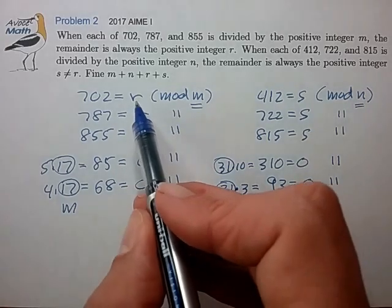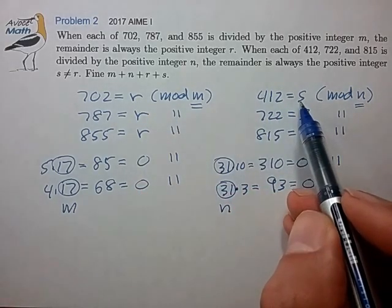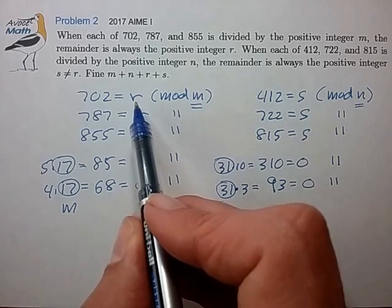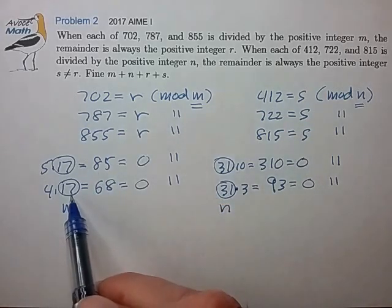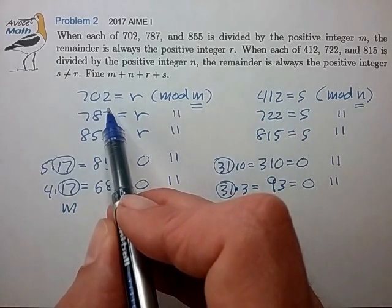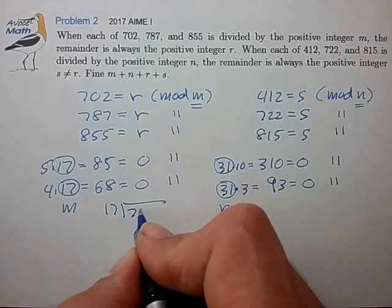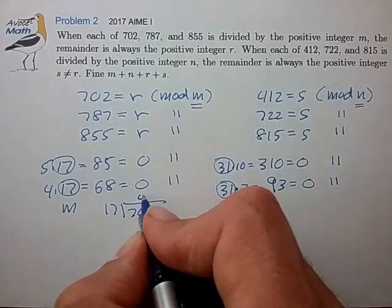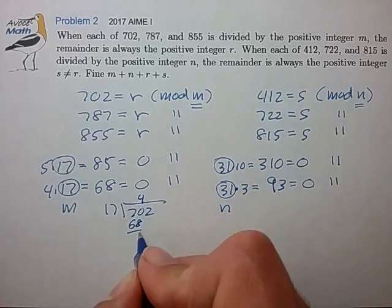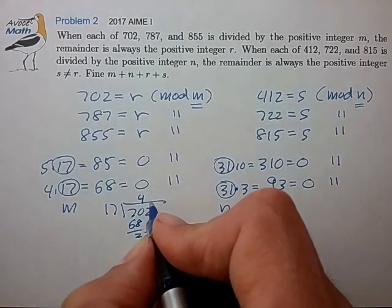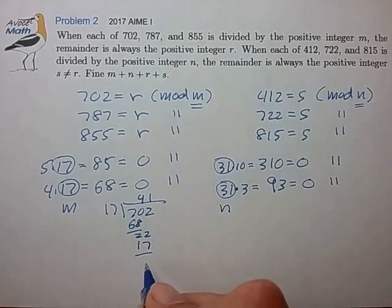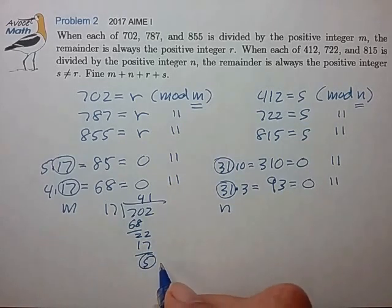Okay, so now we just have to calculate r and s. I think we just have to do that the old-fashioned way. Let's divide 17 into 702 and find the remainder. 17 into 702 is 4, 68, 22, 1, 17, 5. So that's equal to r.